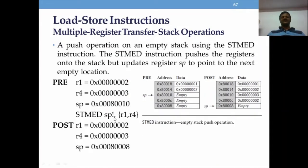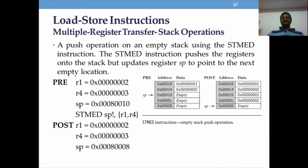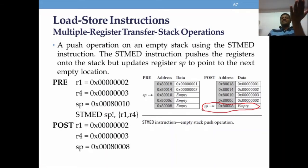In case of empty descending, replace F with E. The stack pointer points to the next empty memory location, not the last filled one. So in full descending the pointer stays at the current data-stored location; in empty descending it points to the next empty location. The same concept applies for full ascending and empty ascending.